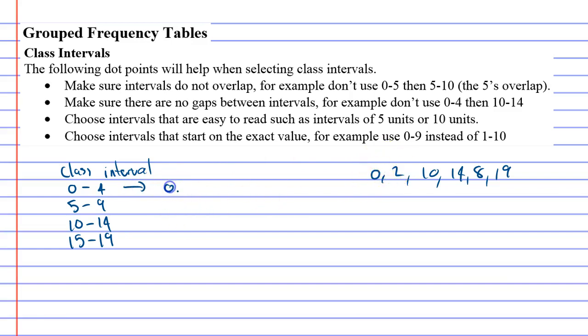The numbers from 0 to 4 is two of them, 0 and 2. The numbers from 5 to 9, there's an 8 there. The numbers from 10 to 14, you've got your 10 and your 14, so there's two of them. And the numbers that are from 15 to 19, there's just one of them, the 19.